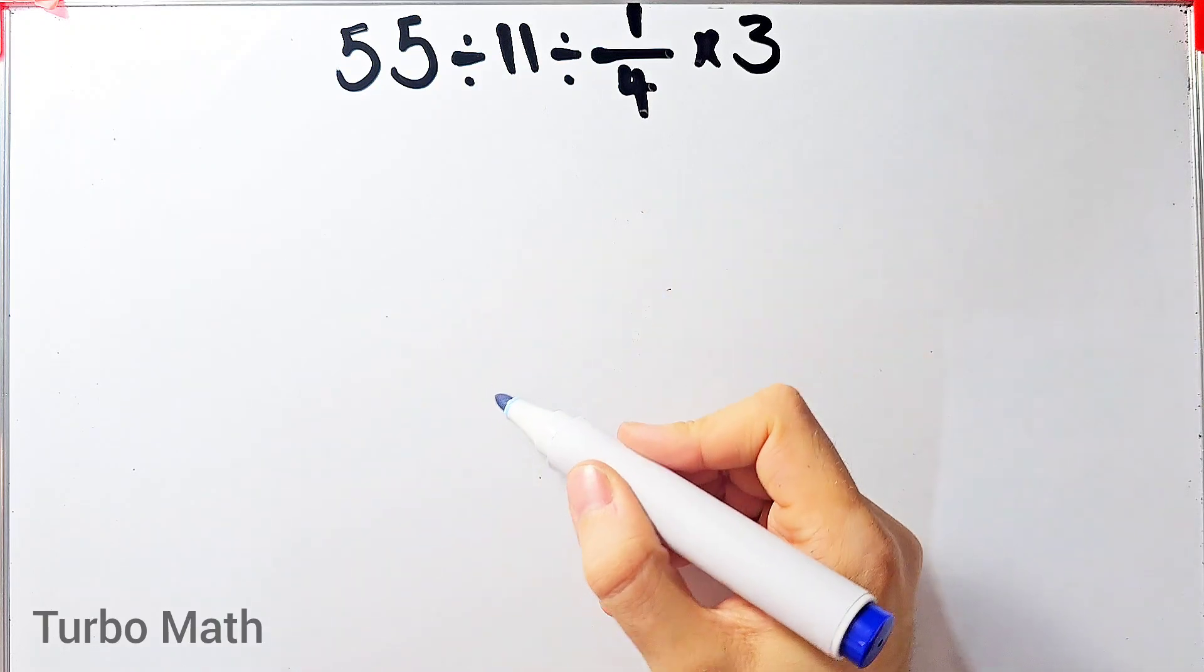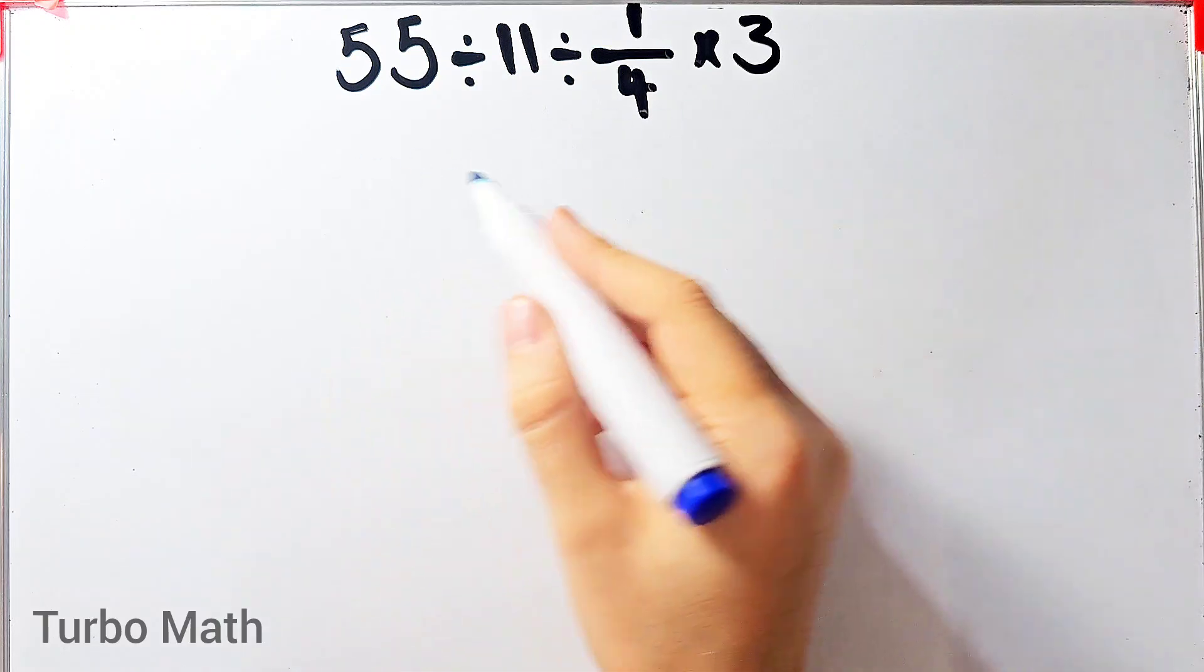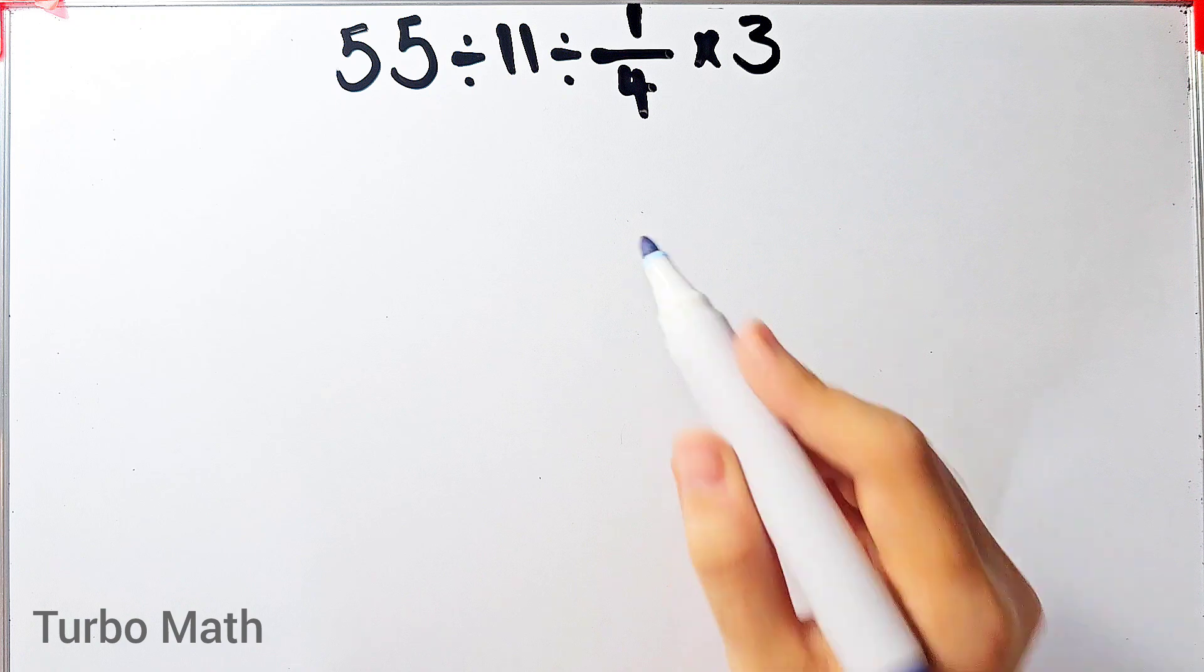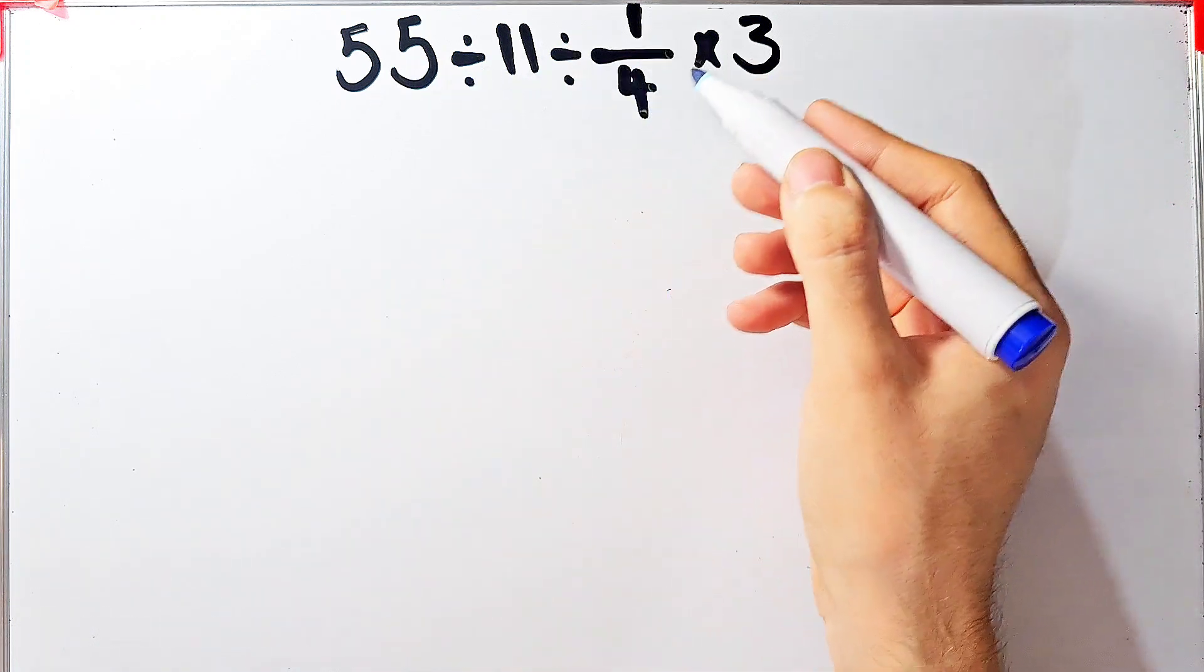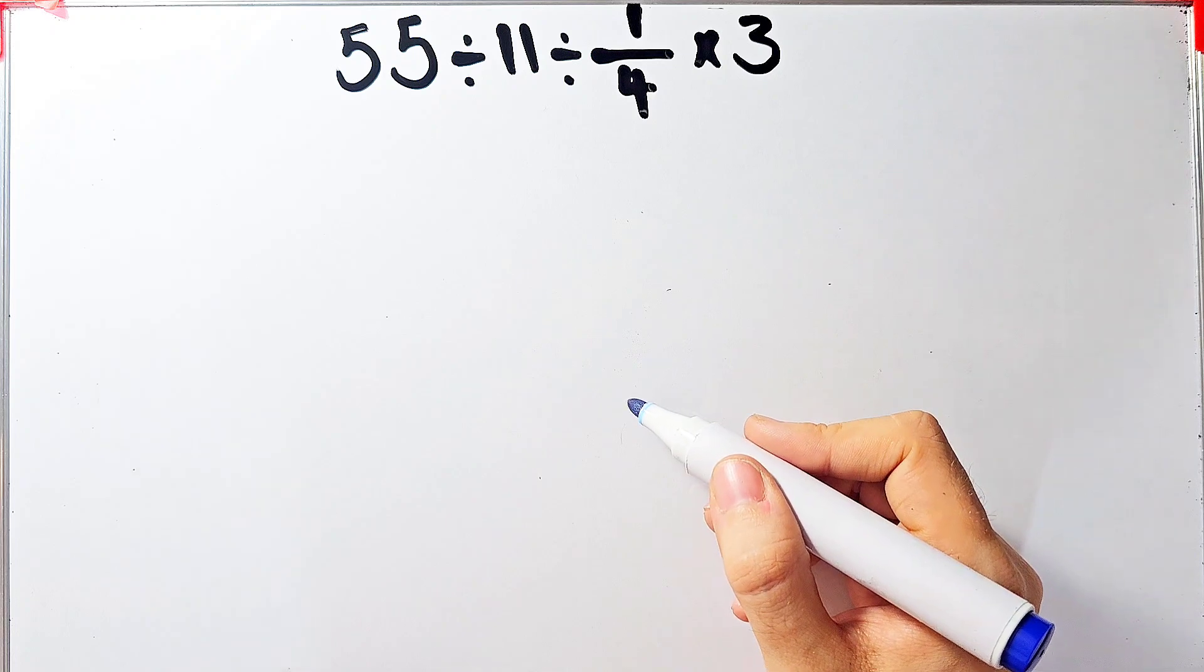Hi friends, welcome to Turbo Math channel. Many people when they see this question don't know which operation to do first, so they might get it wrong. 55 divided by 11 divided by 1 over 4 times 3 - what is the answer of this question?